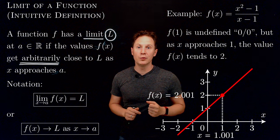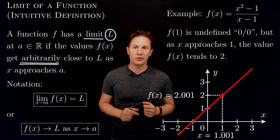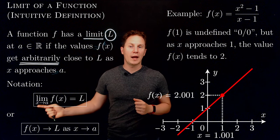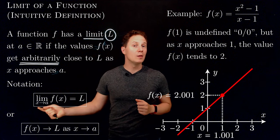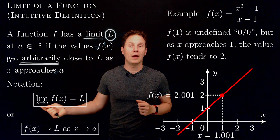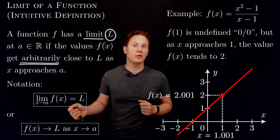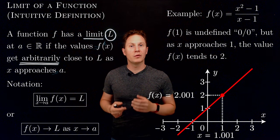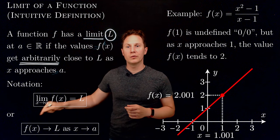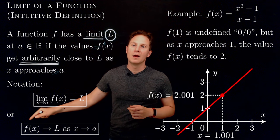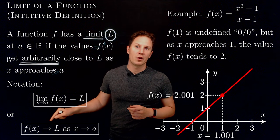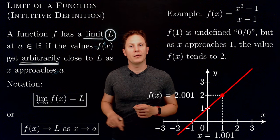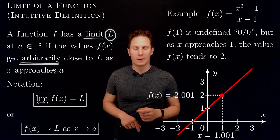Here is the notation we use to express limits. We write these symbols and say that the limit as x approaches a of f(x) equals L, or sometimes we use arrows to indicate that f(x) tends to L or converges to L as x approaches a.